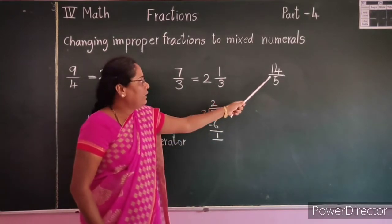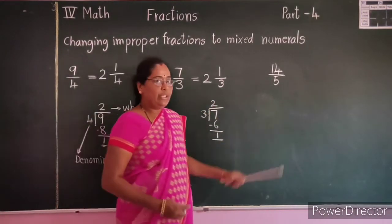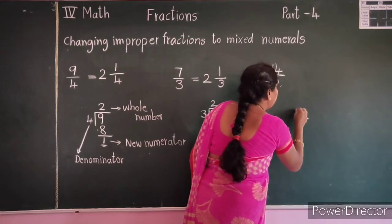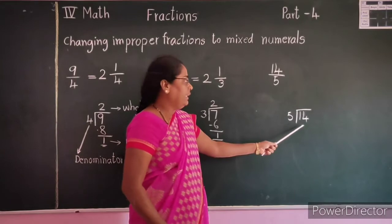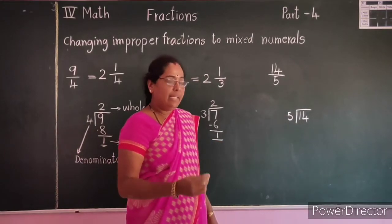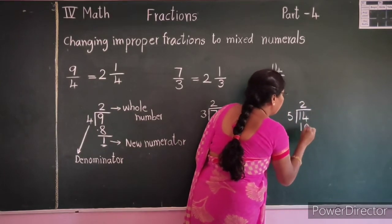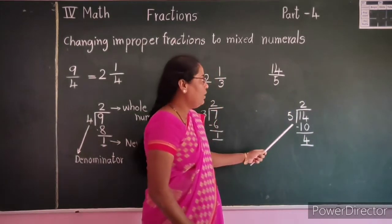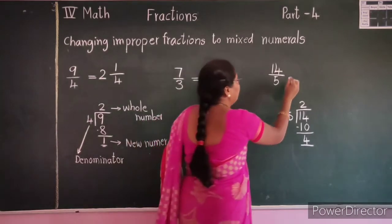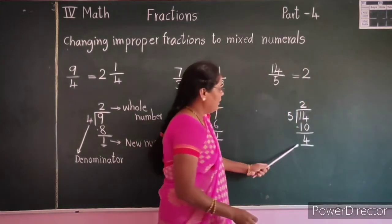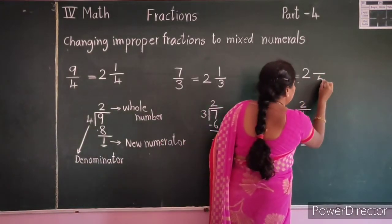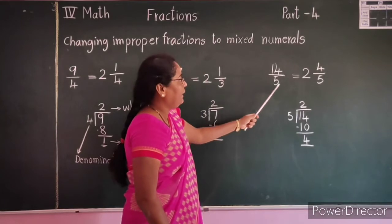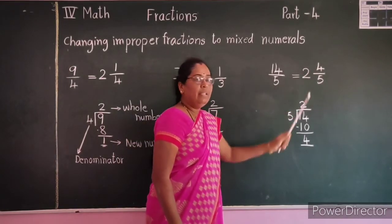Let's see one more example: 14 by 5. First we divide the numerator by the denominator: 14 divided by 5. 5 times 2 is 10. 14 minus 10 equals 4 — the remainder is 4. The quotient is 2, which is the whole number. 5 stays as the denominator. The new numerator is 4. So 14 by 5 is equal to 2 and 4 by 5.